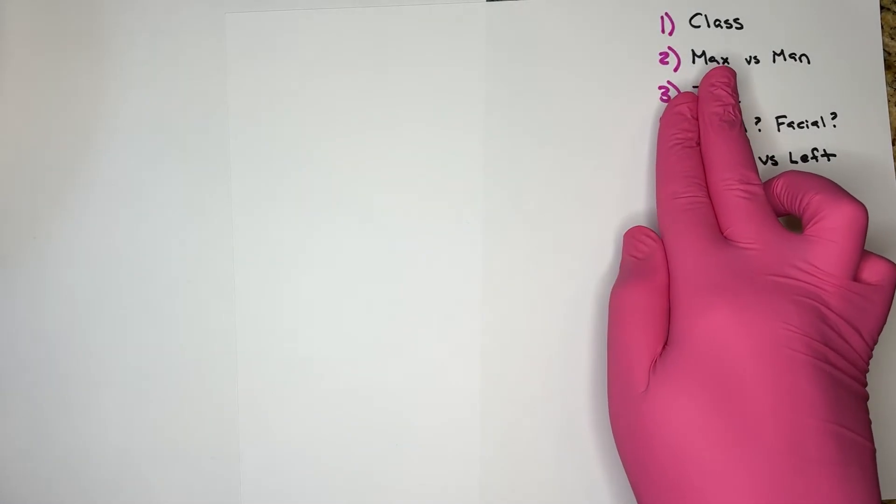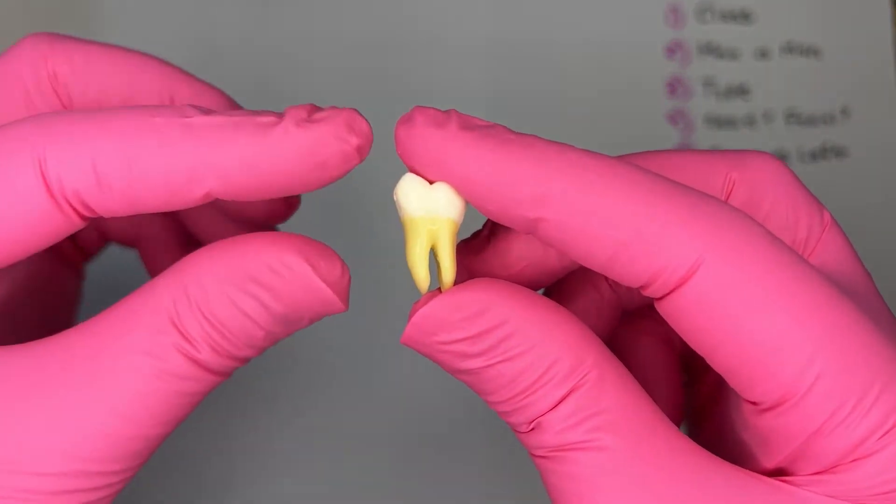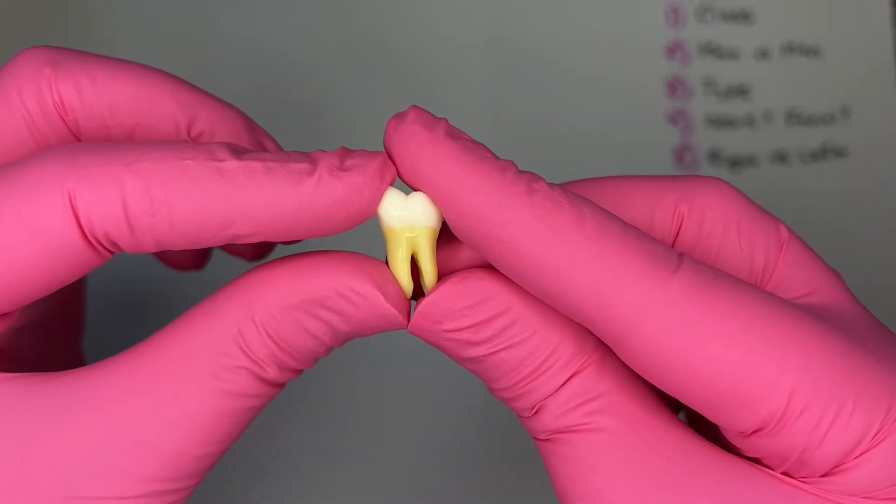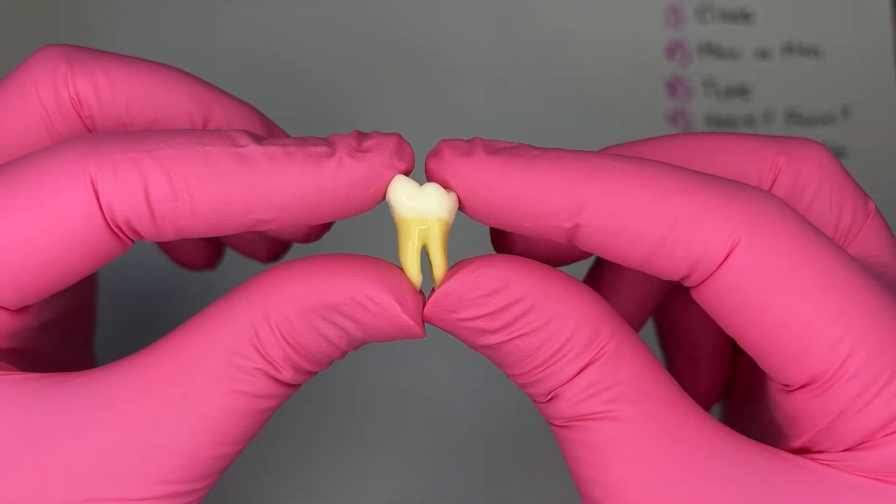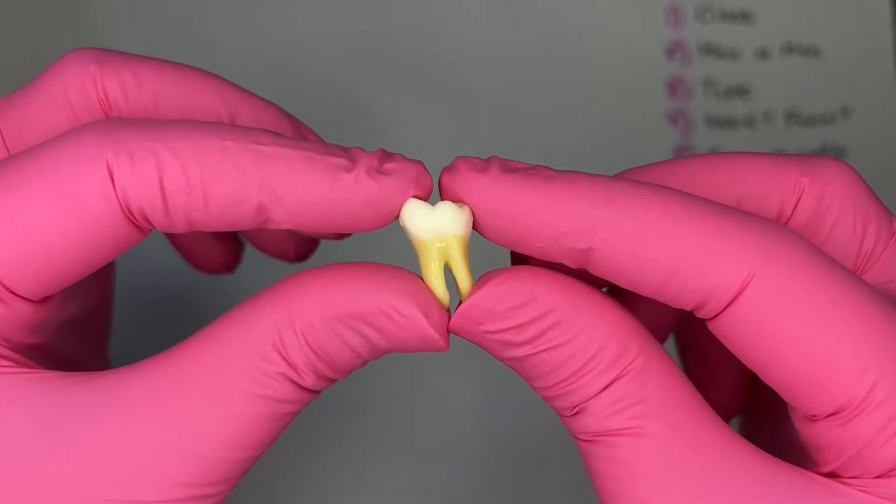Step two, is it a maxillary or mandibular molar? This tooth has two roots, so I know this is a mandibular molar. If it had three, it'd be a maxillary.